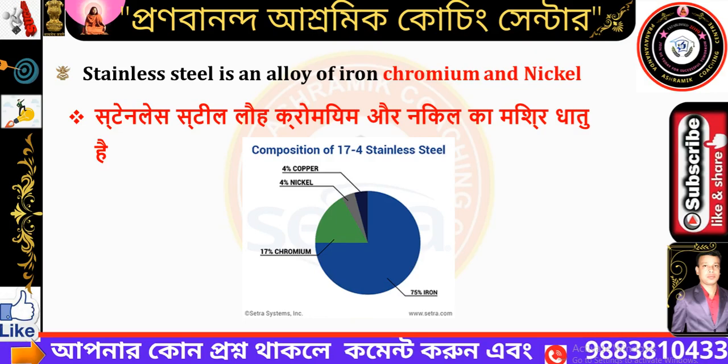Stainless steel is an alloy of iron, chromium, and nickel. Stainless steel is an alloy — alloy means 'shankar dhathu' (mixed metal), and shankar dhathu means the same thing.